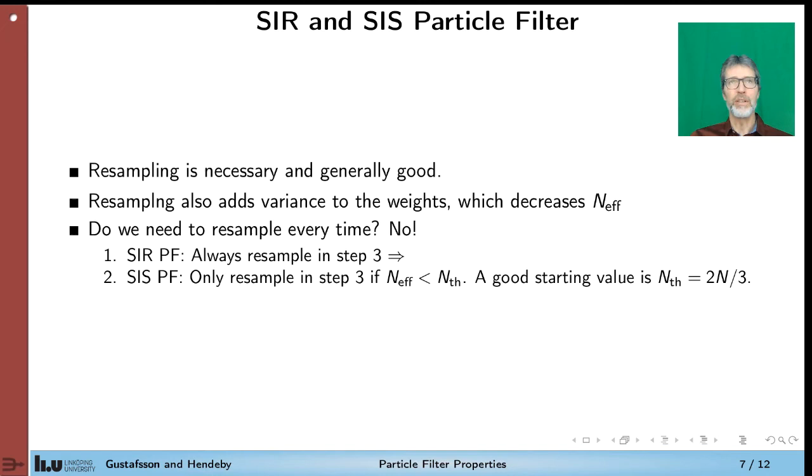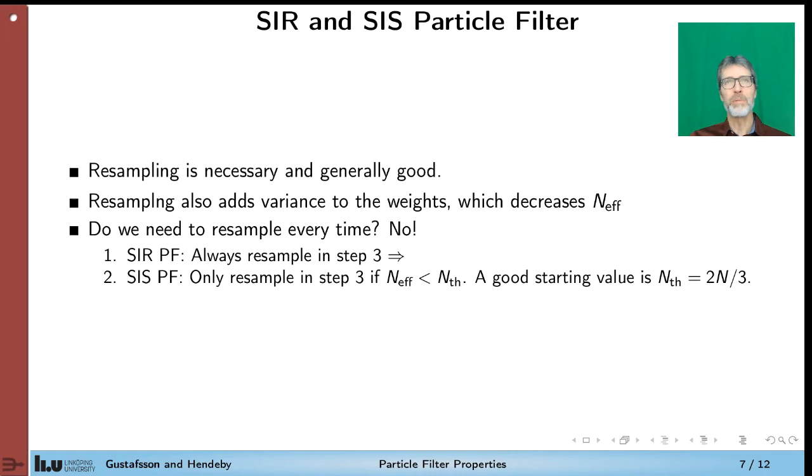So we have seen the abbreviation SIR, sample importance resampling, before. Now we come to a new abbreviation, SIS, sequential importance sampling. So the basic idea here is that resampling is necessary and generally good. But on the other hand, resampling also adds variance to the weights. So the resampling step increases in some way the variance of the weights, which also decreases the efficient number of particles. So the compromise is to not resample every time. In the SIR particle filter we have seen before, we resample every time. But in the SIS particle filter, we monitor this efficient number of particles. And only if it is smaller than the threshold, we resample. Otherwise, we let the particles work without resampling. A good starting value for this threshold is 2N over 3.